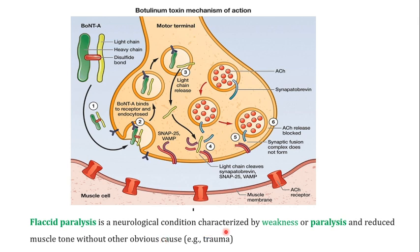In this case, unlike trauma, the botulinum toxin is blocking the release of acetylcholine, thereby weakening and paralyzing the muscles and reducing muscle tone.